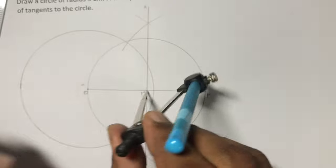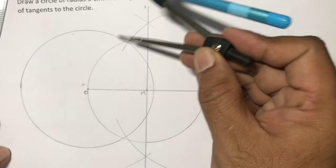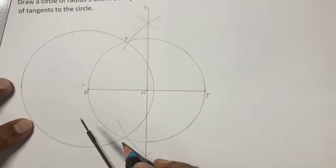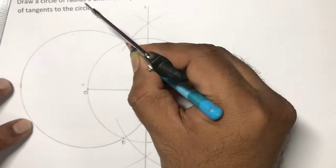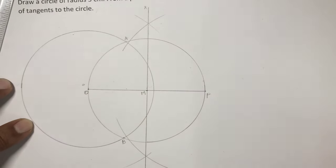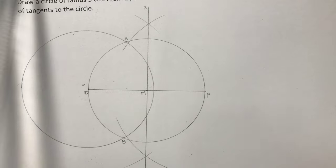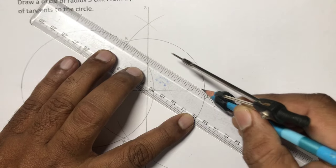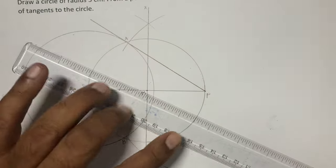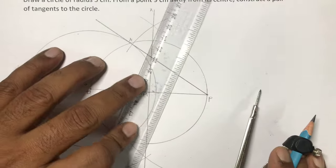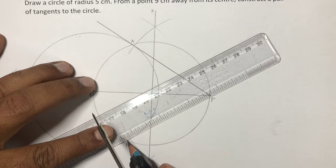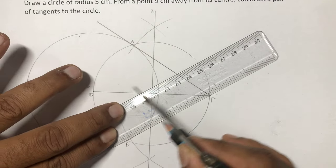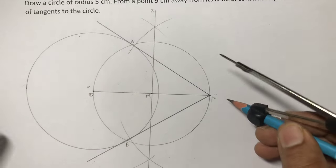Wherever this circle, the one which I drew just now, wherever this circle cuts the previous one, that point you mark it as A and B. This is A and this point is B. Join PA and PB. Those are the tangents from external point P. PA and PB, these are the two tangents drawn from external point.